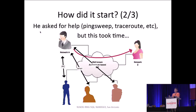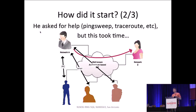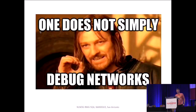You probably recognize the scenario where a customer tells you they have an issue. You ask them for a traceroute, and they provide one without any timestamp — or even better, they put a screenshot of the traceroute in a Word document and email that to you. The Ring addresses these types of issues, because we all know debugging networks is not trivial, and the Ring helps in that regard.